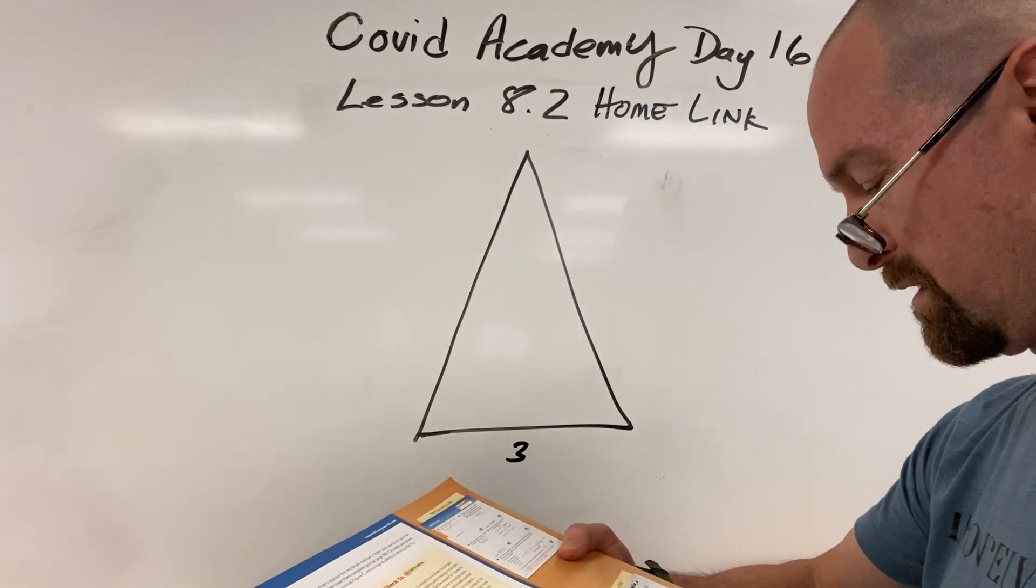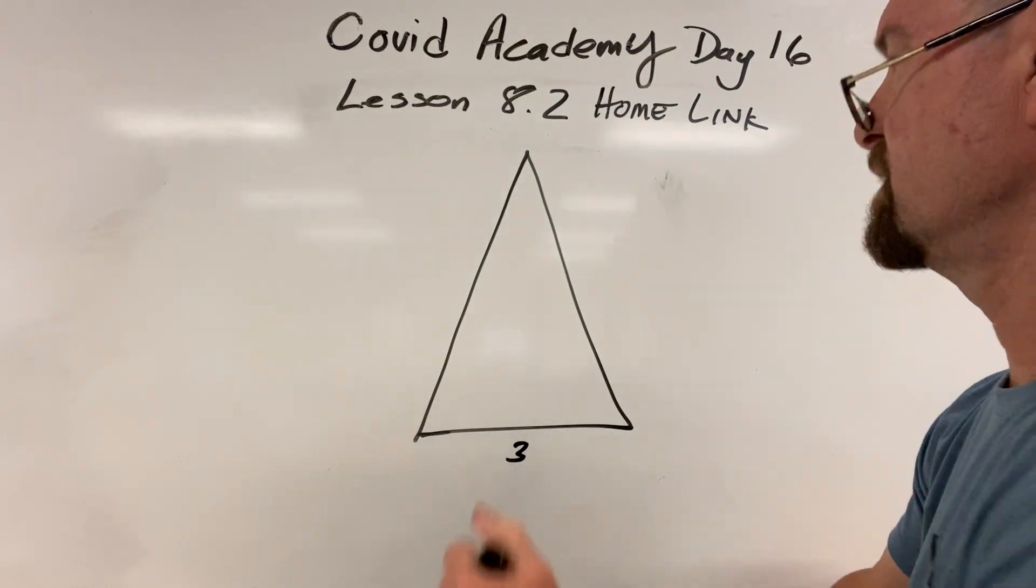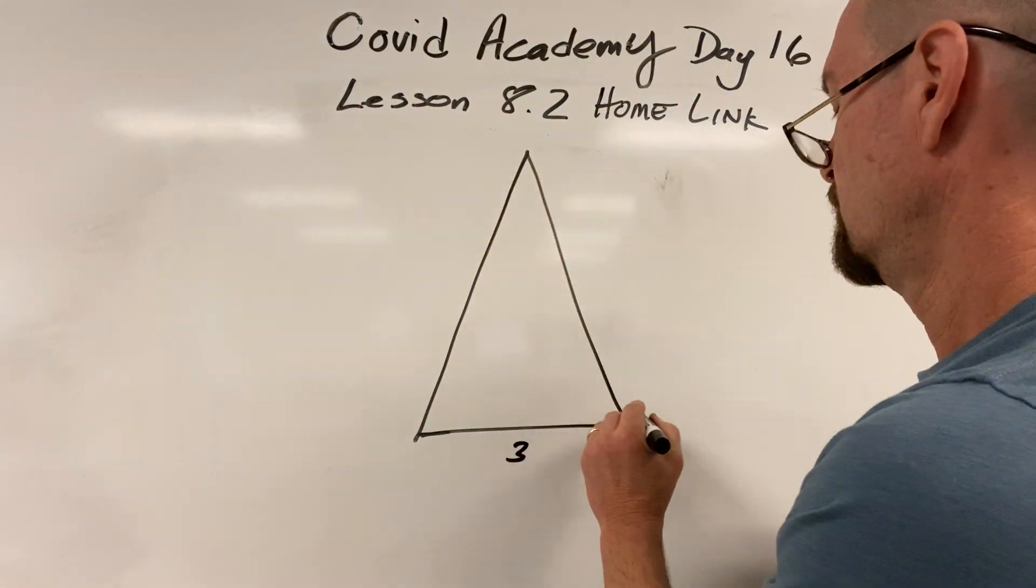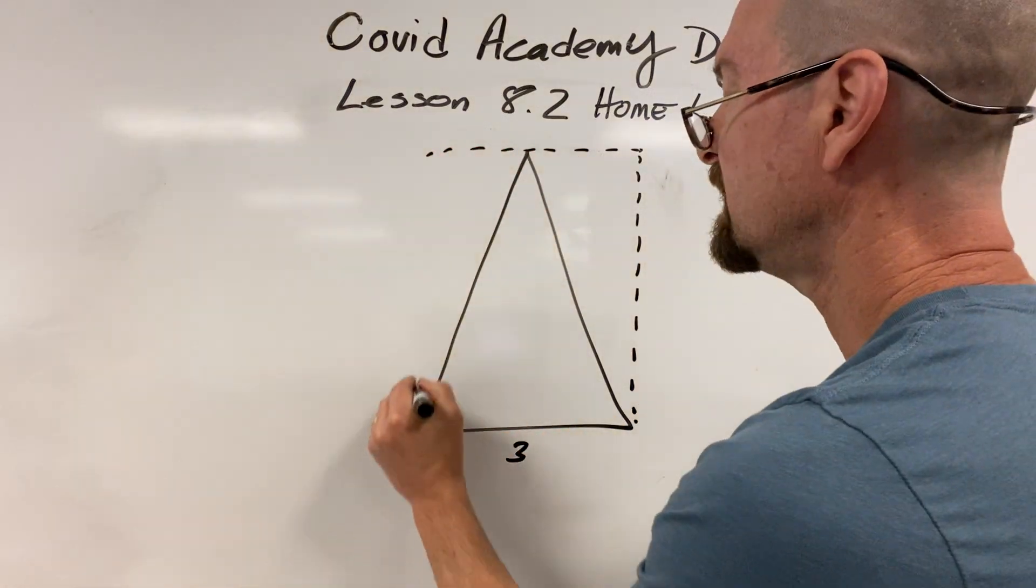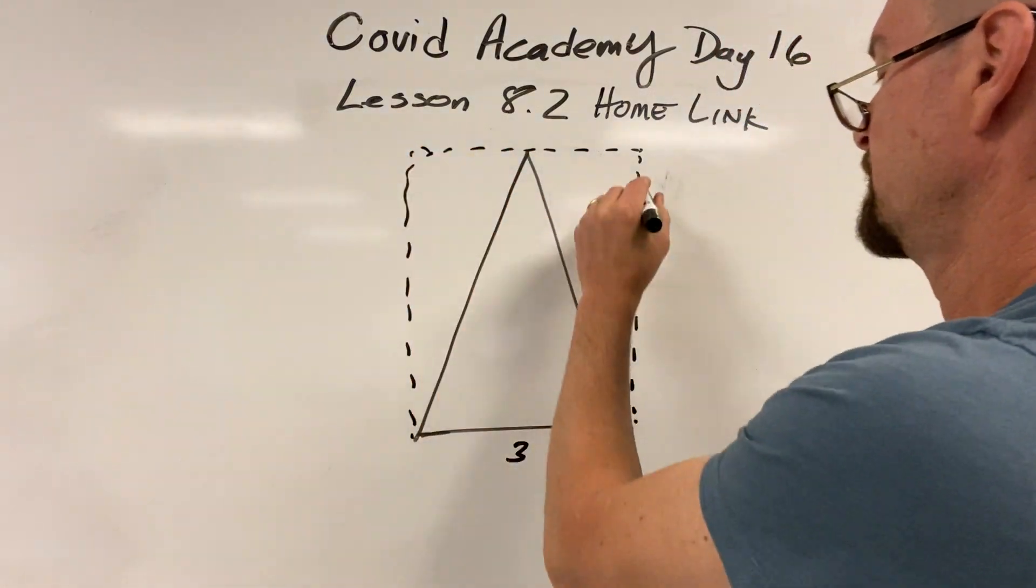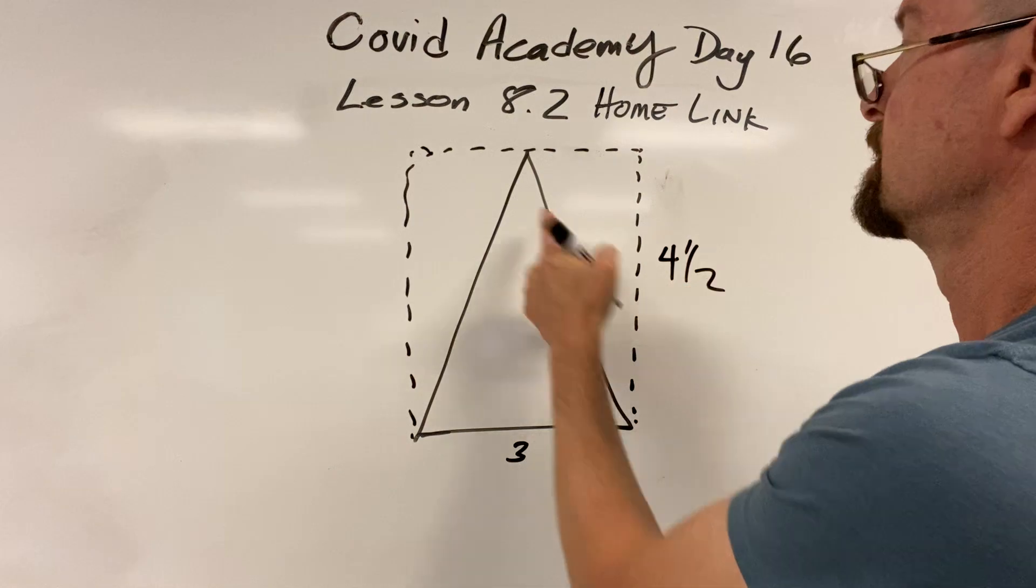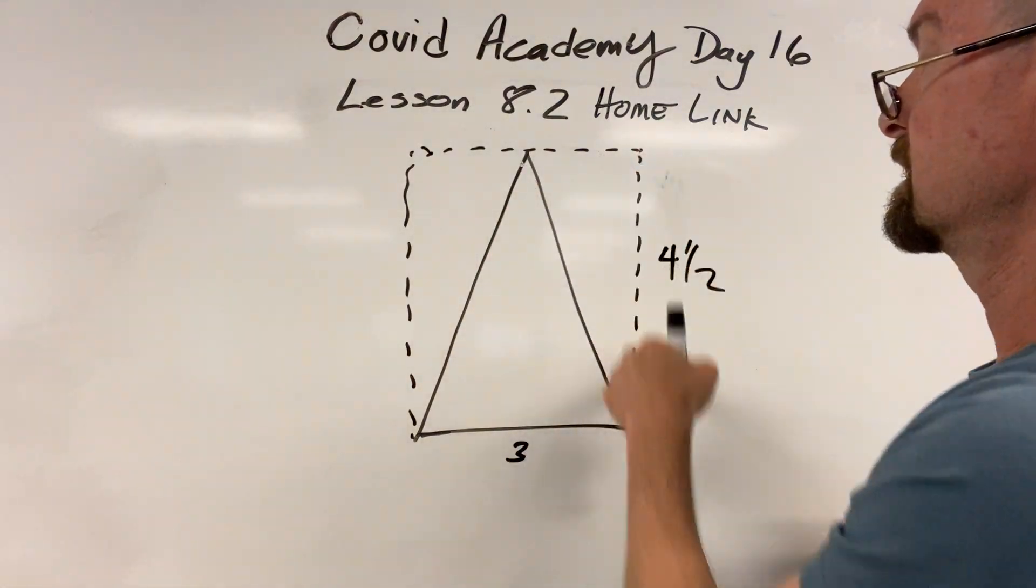1, 2, 3, 4 and a half. It's got to be 4 and a half. So this height was 4 and a half, so that's like this rectangle.